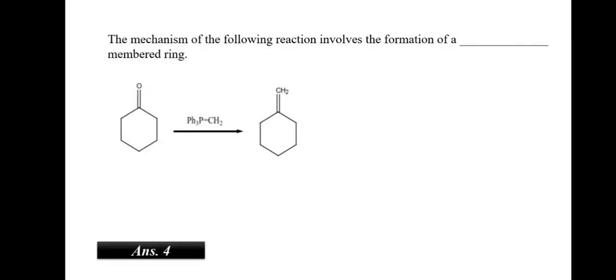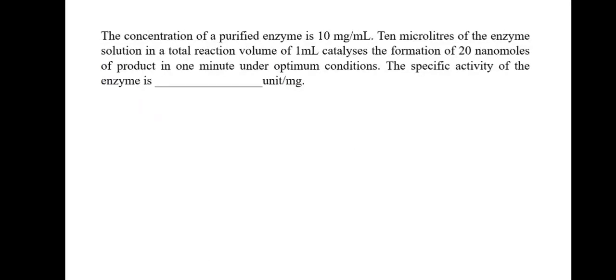The mechanism of the following reaction involves the formation of a dash membered ring. We can see that in this complex, there is addition of 3-phenyl ring. Thus, in the intermediate, there will be addition of 3-phenyl ring to the already existing ring. Thus, there will be 4 rings attached. So, the correct answer would be there would be a 4-membered ring.